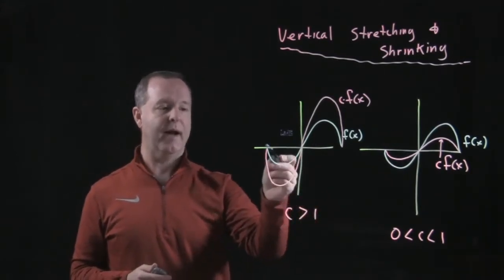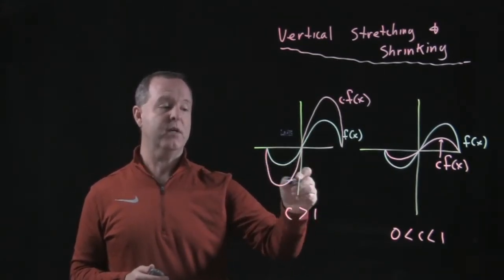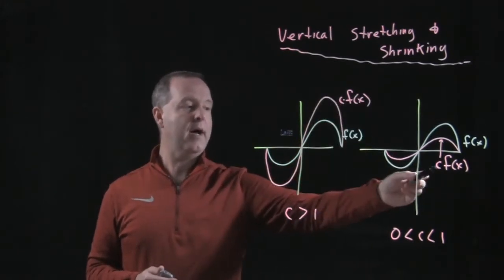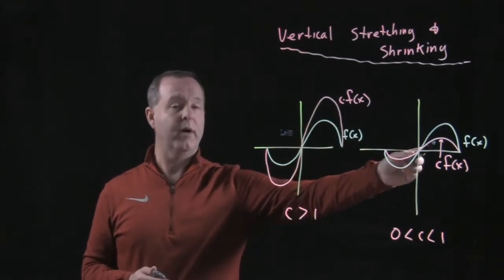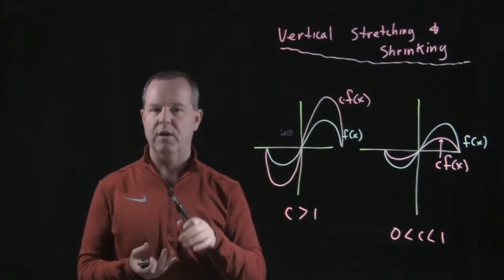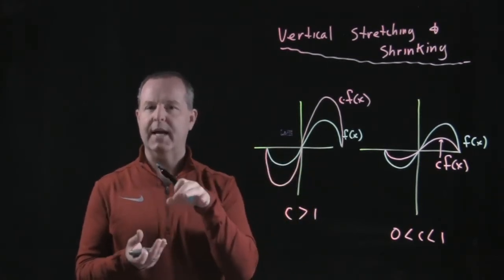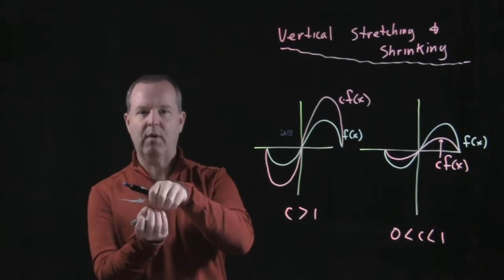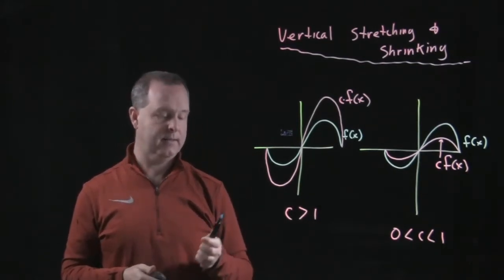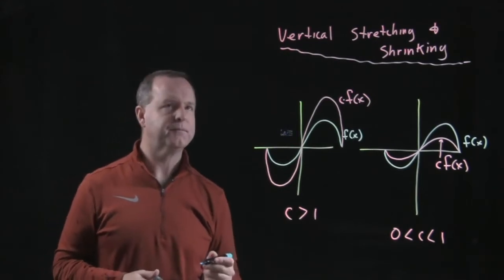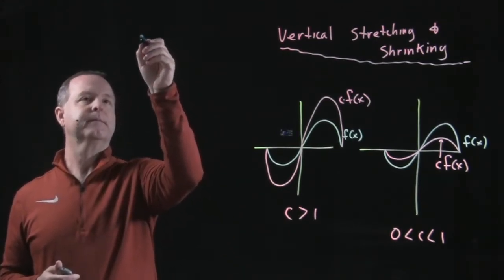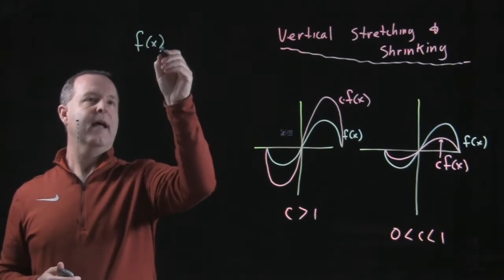I have two ideas here: the basic function — the pink one — and you can see where it's stretching and where it's shrinking. The points where it crosses the x-axis are the nodes where it's tied, and just like a rubber band, it stretches or shrinks from those points.